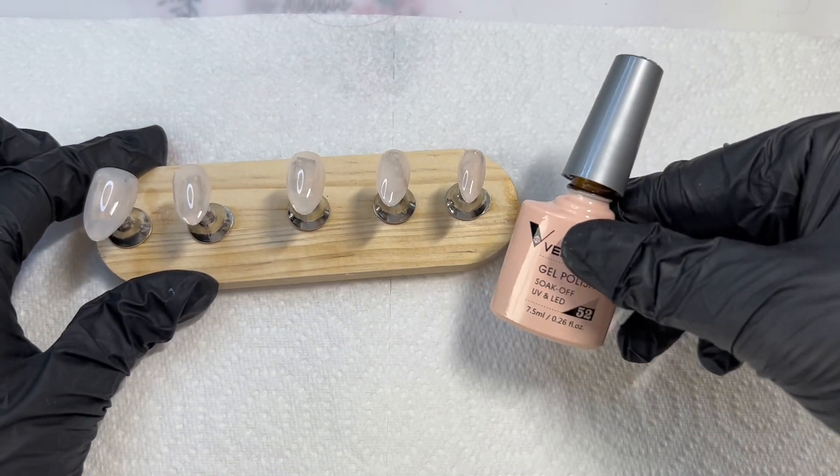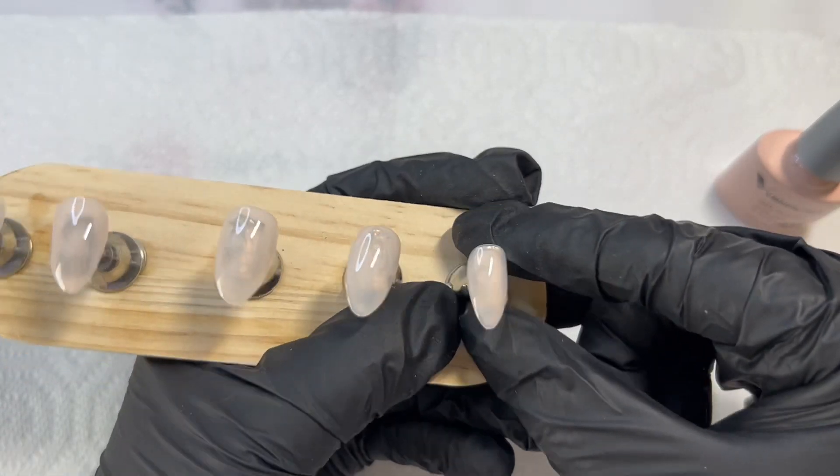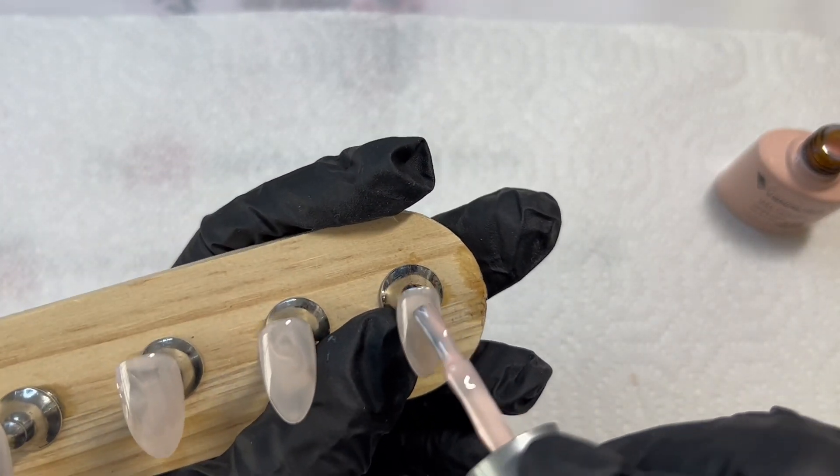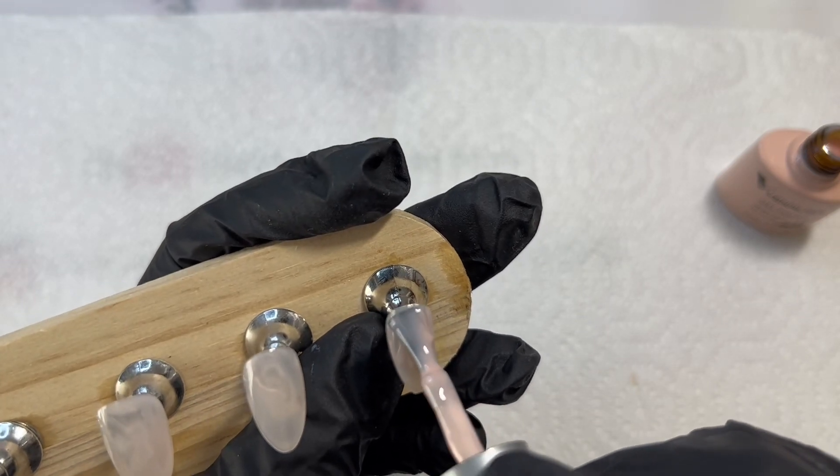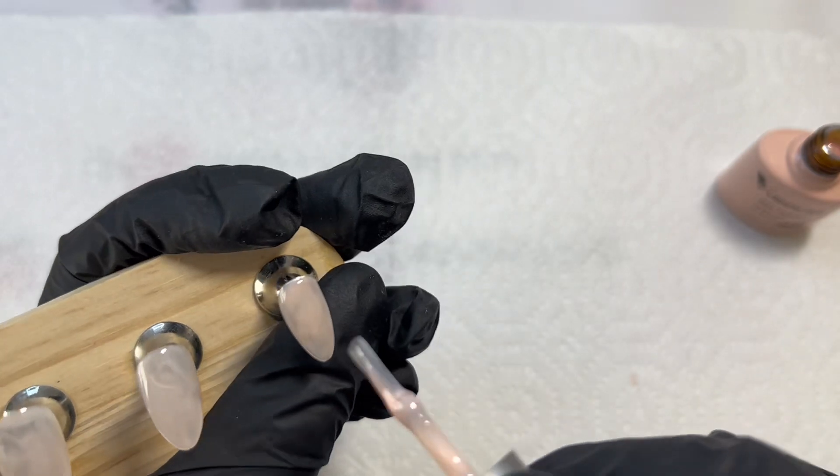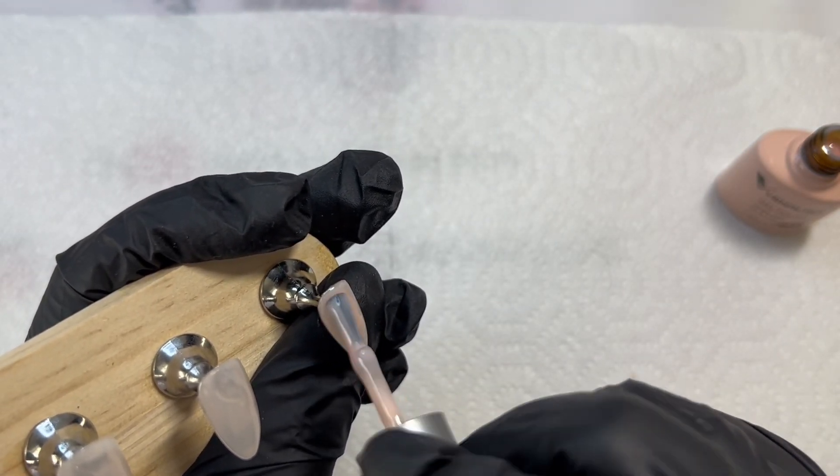Hello friends and welcome or welcome back to my channel. I hope you are all well. Today we have a nice super easy and very quick set of press-ons using the color number 52 from Venalisa, which is a lovely jelly nude pink color.